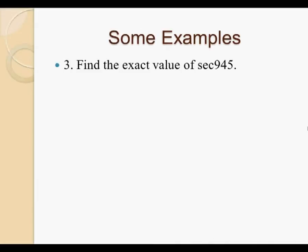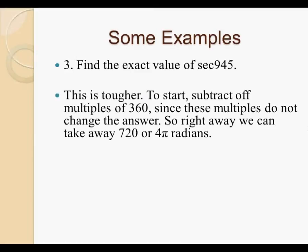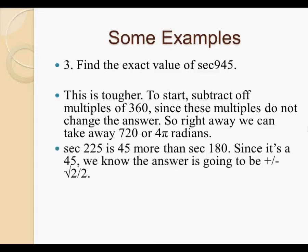Our last example asks us to find the exact value of secant 945. Now, this might look really tough at first, but note that if you are asked to find the value of a really large angle, you can always subtract off multiples of 360, since these multiples do not change the answer. So if you were to find the cosine of sine 1440, you could take off 4 of the 360s, and it becomes sine 0. So for secant 945, we can take away 720 degrees right away. So we take off 2 full circles. It makes no difference. We just wipe them off. So our new question is secant 225.